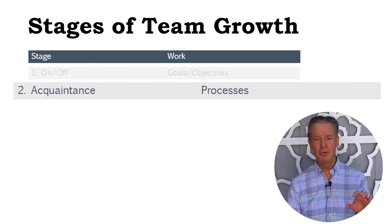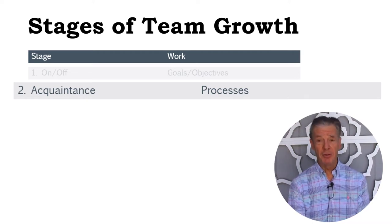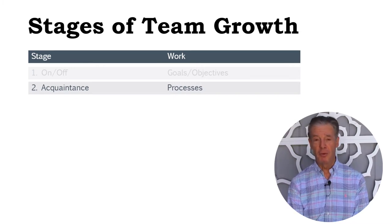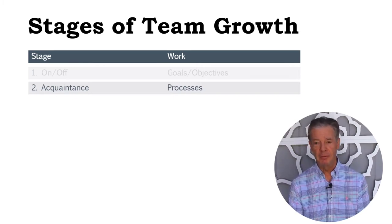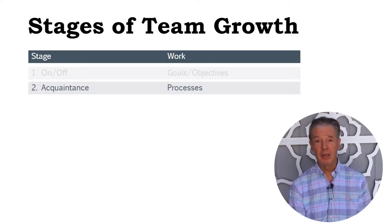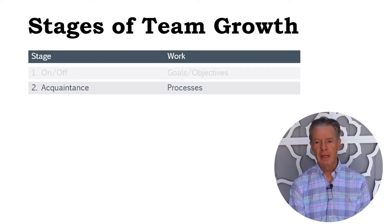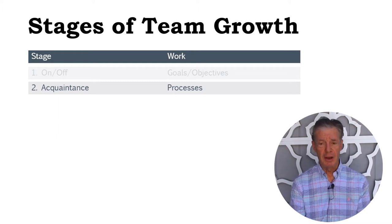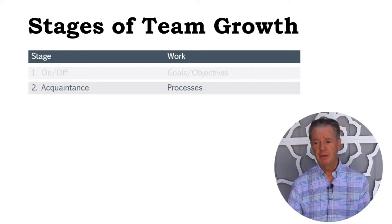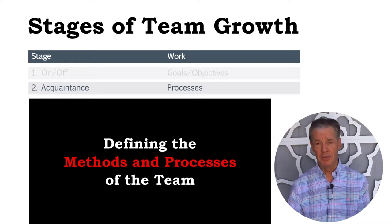Step number two in team evolution is acquaintance. Do you know everybody else on the team? Oftentimes you don't. When we've gotten major account teams or global account teams together, one of the first things that happens when you get them all in the same place is they start introducing themselves to one another because they've never actually met in person. In team growth, getting everybody introduced is part of it, but the work that goes along with that is defining the methods and processes of the team.